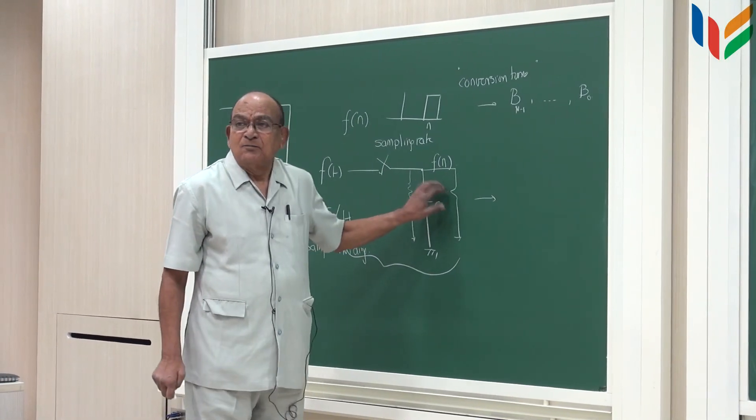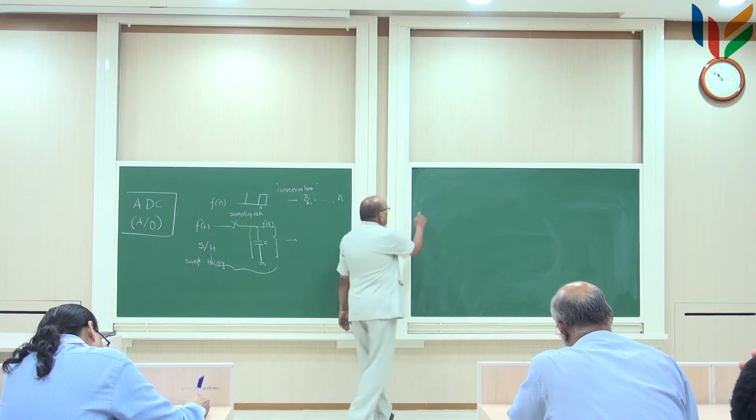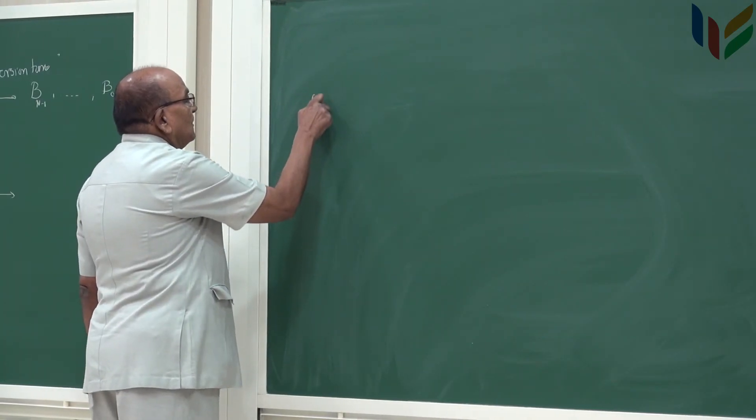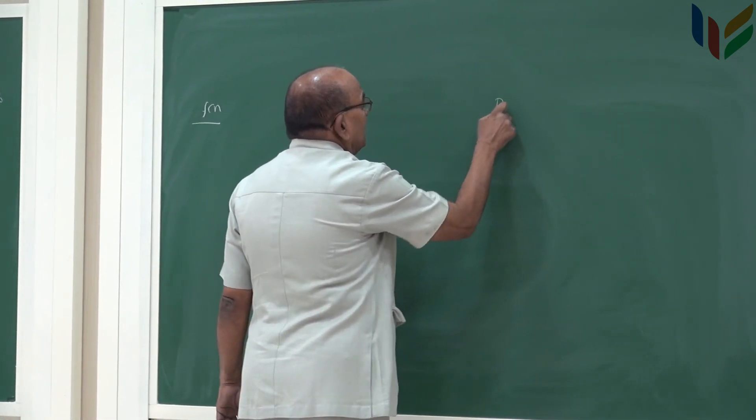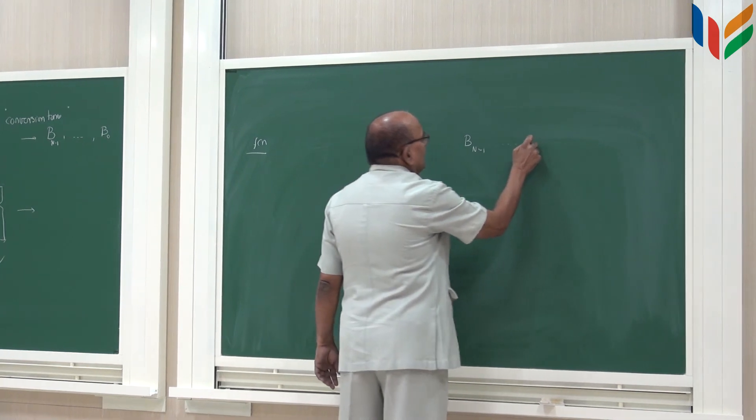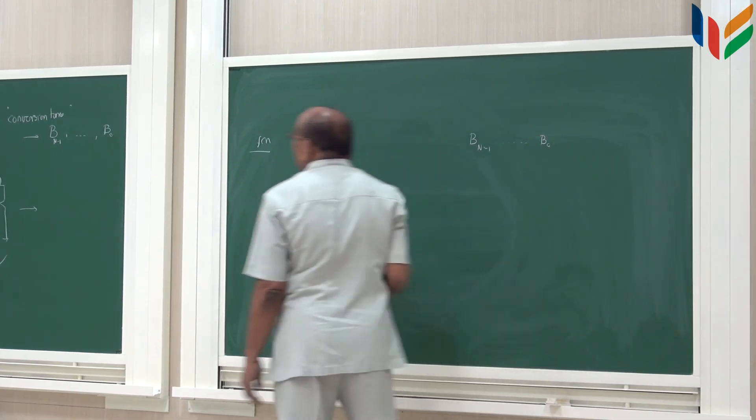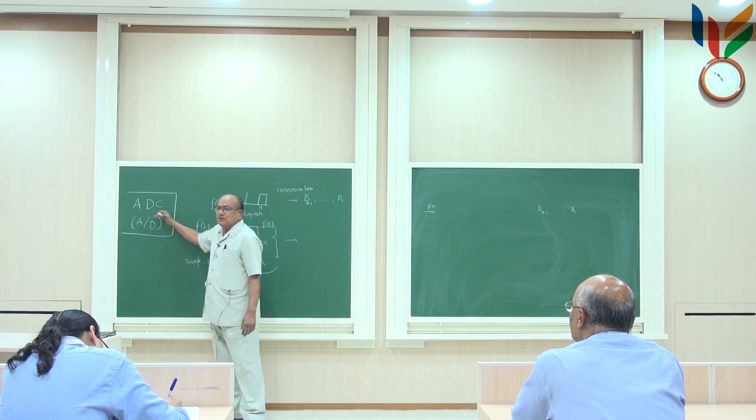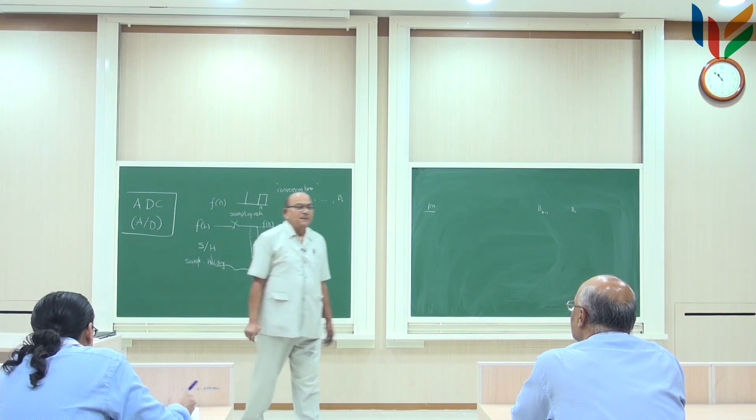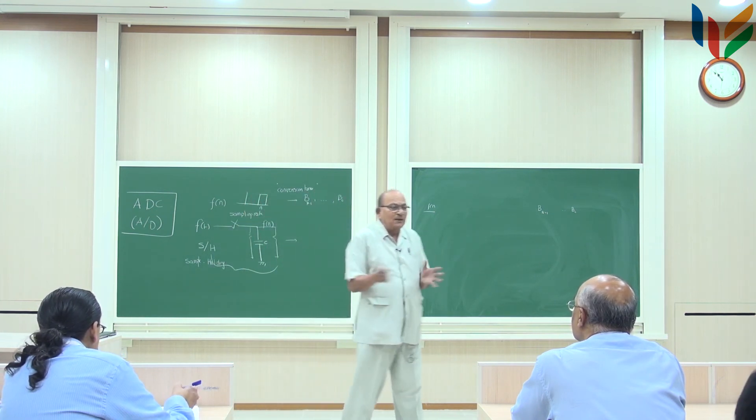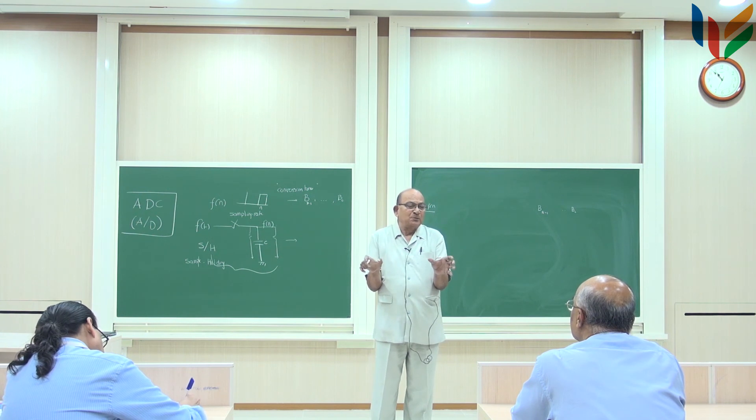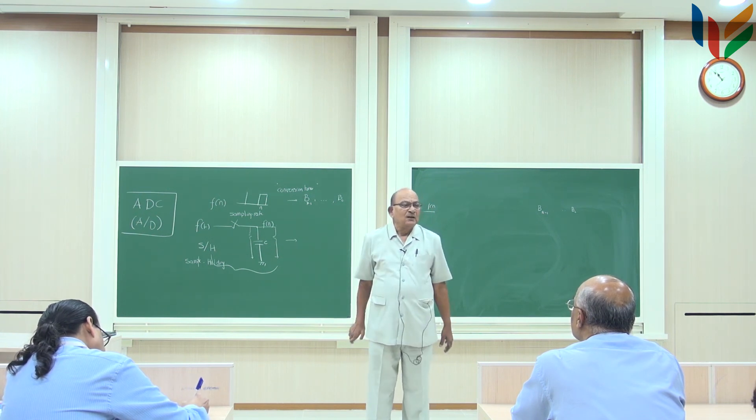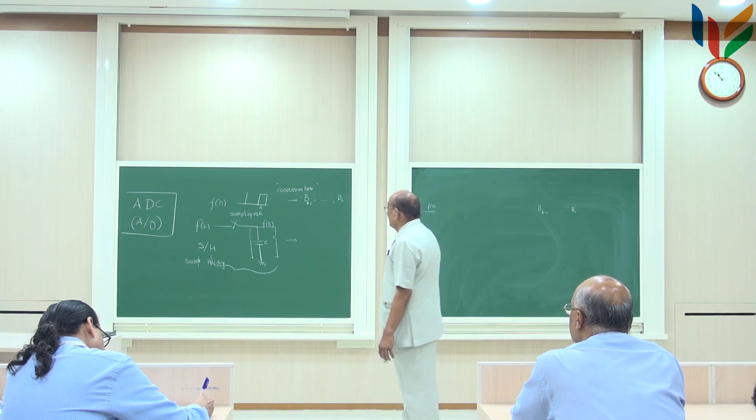Now I got an F of n. Once this F of n is available, I need to convert it into the corresponding b n minus 1 to b 0. Now, the next one which is actually the ADC. Sample and hold invariably forms a part of ADC because without sample and hold you cannot do ADC. It is either built as a part of ADC or two chips, one chip for sample and hold and one chip for the ADC. Commercially they are available. This is a part of ADC.